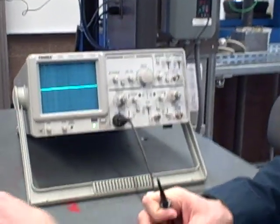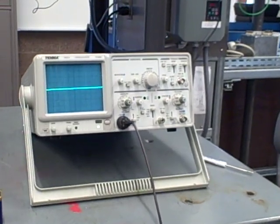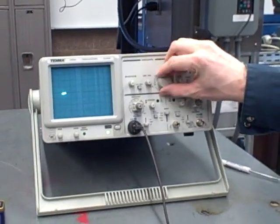Okay, we are on. This is a quick introduction to an oscilloscope, a cathode ray oscilloscope. This is really nothing more than a graphical voltmeter.